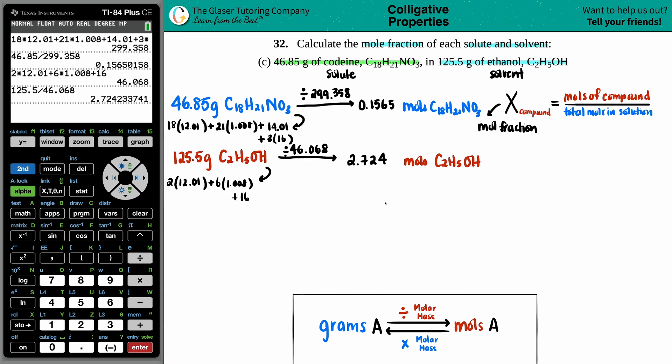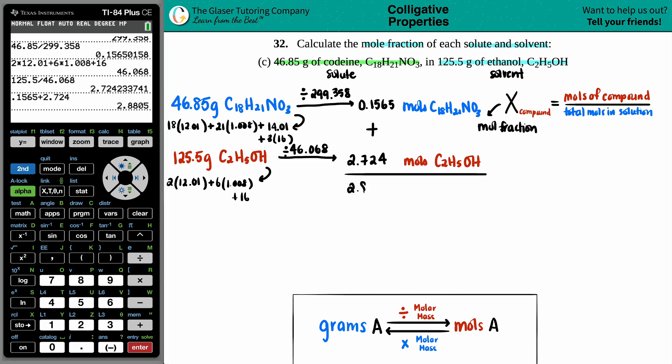Now we need to find out the total moles, right? And the total moles - this is the only two components, it's the codeine with the ethanol. So what we're going to do is we're just going to add these two mole values up. So 0.1565 plus 2.724, you get 2.8805 total moles, and that's of your whole entire solution.